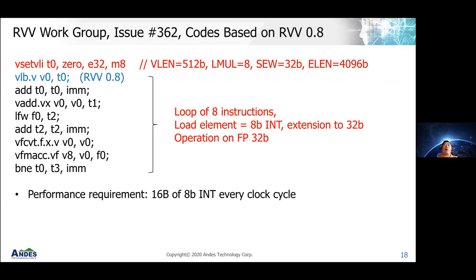Now for the second example — Issue 362 — we have a loop loading data and performing FMAC to accumulate. This code originated in RVV 0.8. The instruction 'vector load byte' (vlb) loads 8 bits of data and performs both the loading and sign-extension to 32 bits in a single instruction. The performance requirement is to execute one instruction per clock cycle.